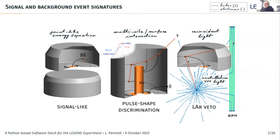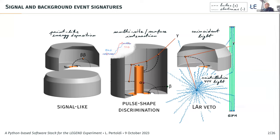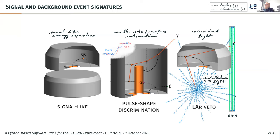A couple of words about the event signatures we expect to see. A signal-like interaction would be the decay isolated — a very well-located energy deposition in a germanium detector. Other backgrounds can cause the pulse shape of signals recorded in detectors to look very different from a single-site event, so it's very important that we apply pulse shape discrimination methods to reject this background. We can also exploit the light emitted in liquid argon to tag certain classes of backgrounds, collected by silicon photomultipliers connected to light-guiding fibers.